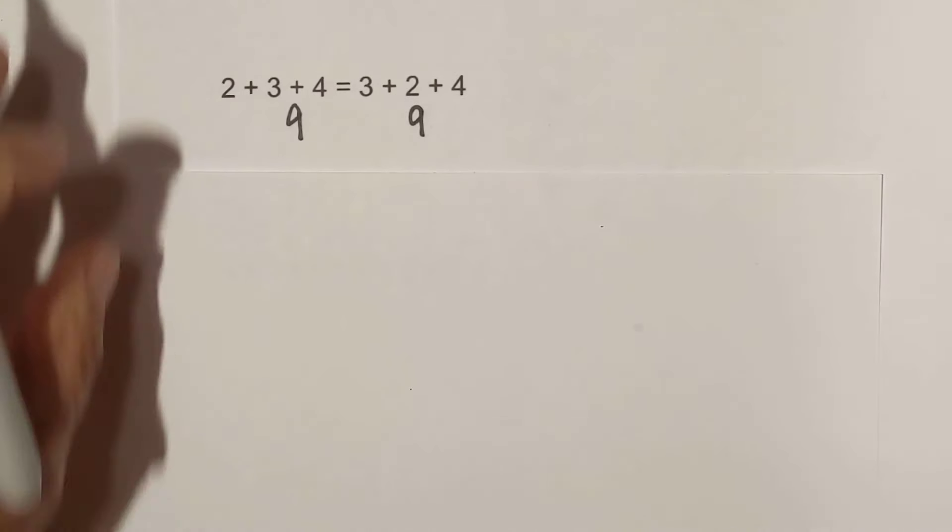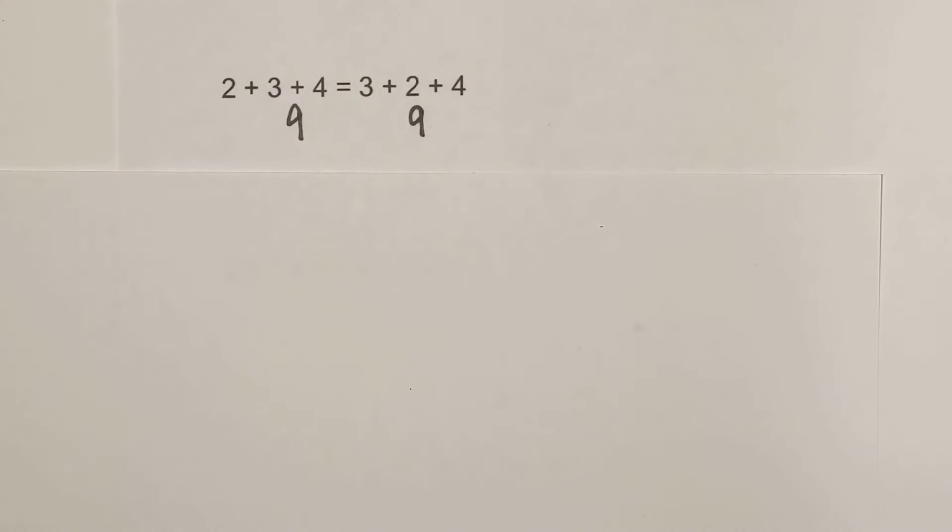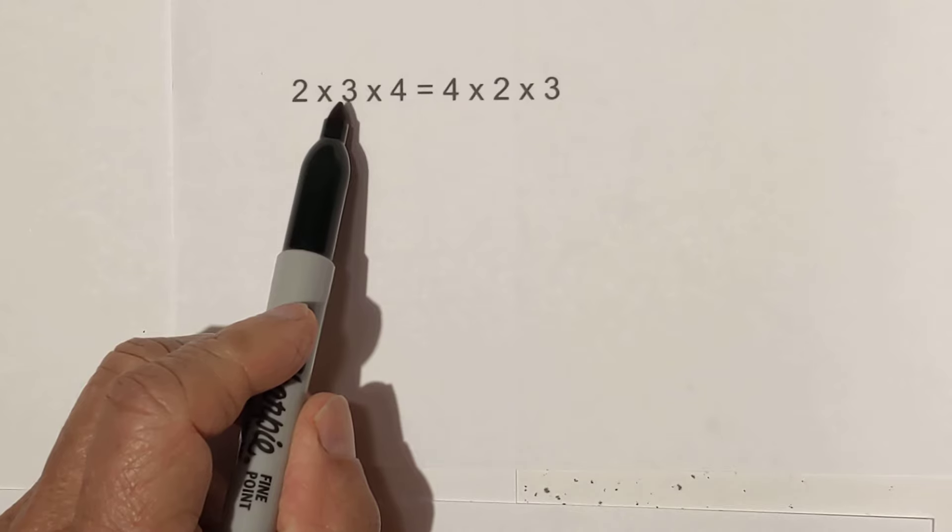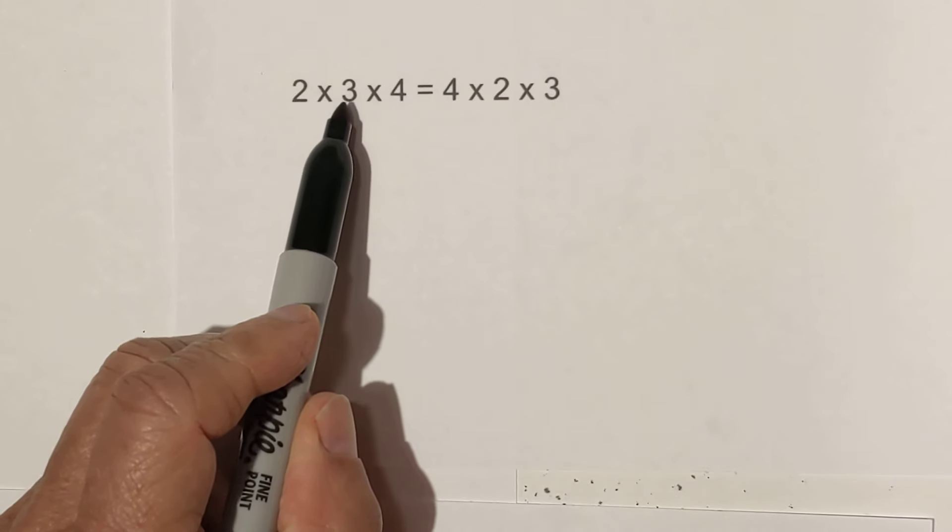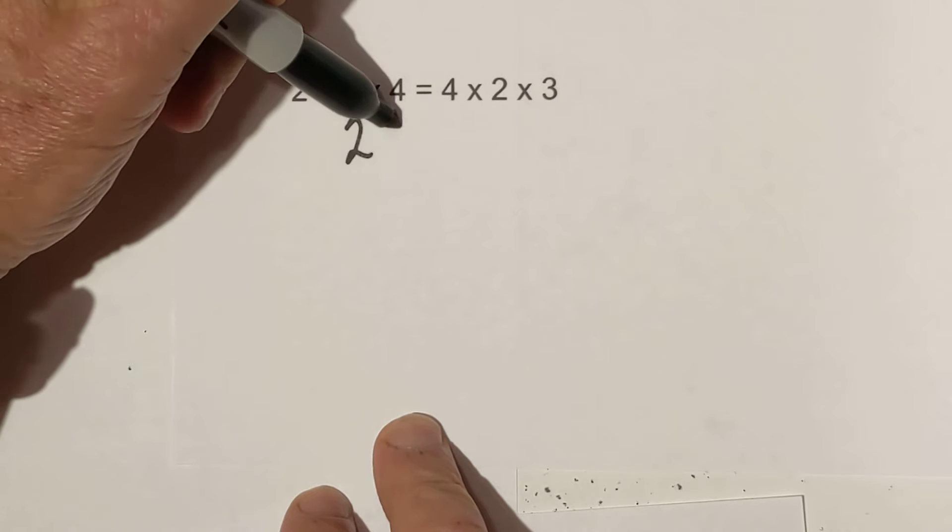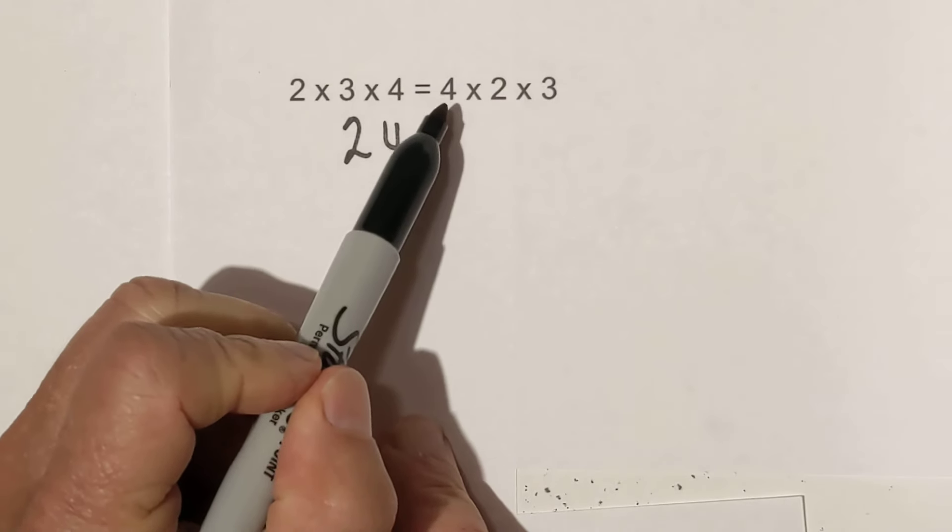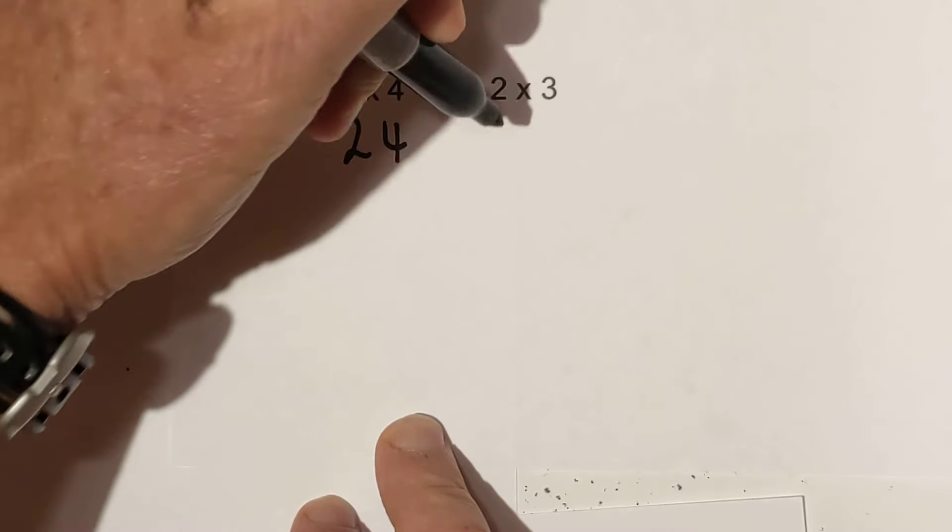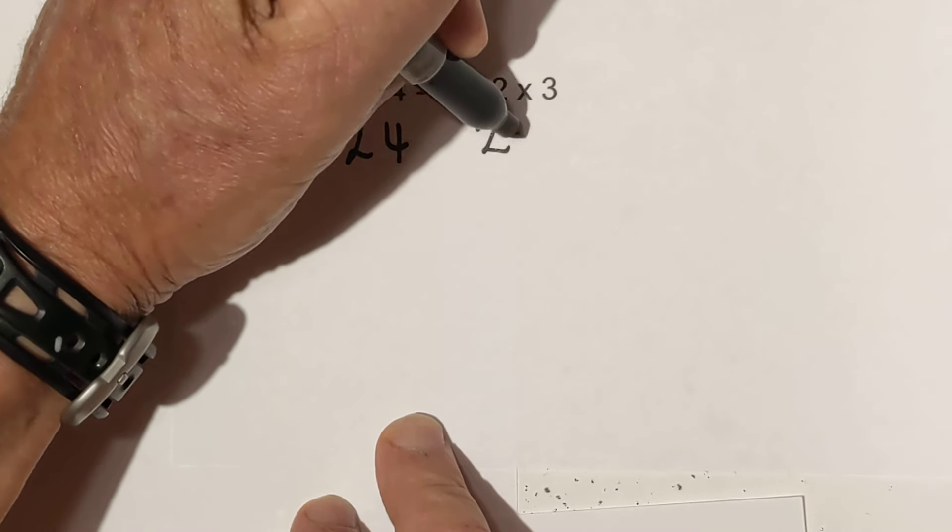And now let's look at a multiplication problem. Remember it doesn't work for subtraction or division. Okay, let's go. Two times three is six, six times four is twenty-four. Now we've changed the order. The four is at the front now. Four times two is eight, eight times three is twenty-four.